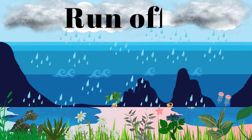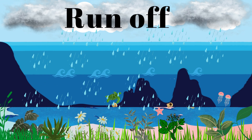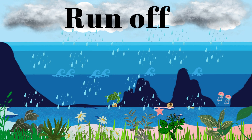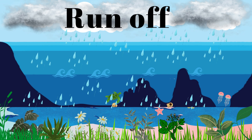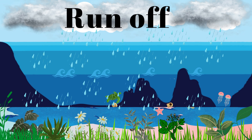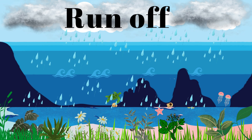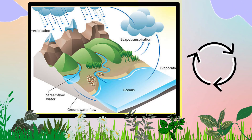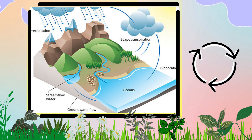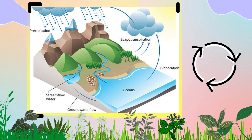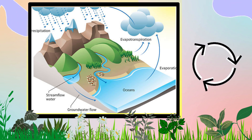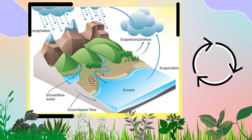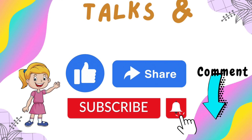Water soaking into the ground is called infiltration, or it can flow into bodies of water like rivers and lakes, which is called runoff. The water from the ground can then make its way back into the atmosphere and the cycle starts all over again. And that's the Water Cycle — a never-ending journey of water on, above, and below the Earth's surface.